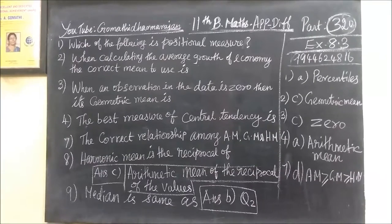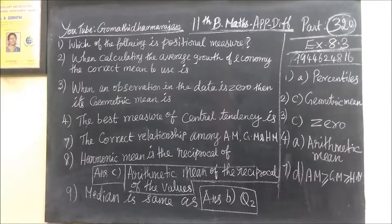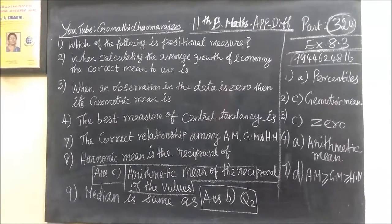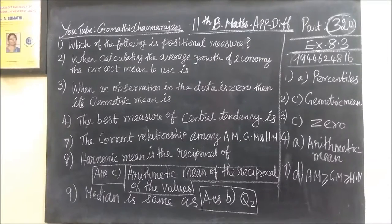Fourth one, the best measure of central tendency is arithmetic mean. Arithmetic mean is the very first measure of central tendency. And the seventh one, matter of calculation, that is the eighth one.